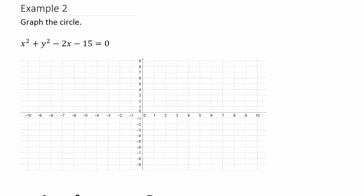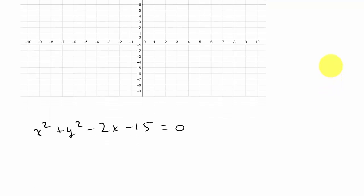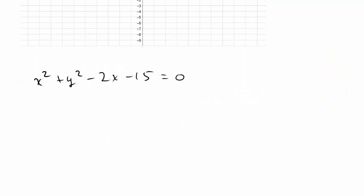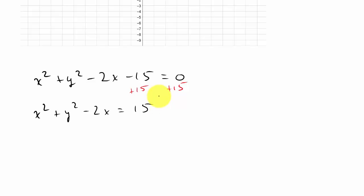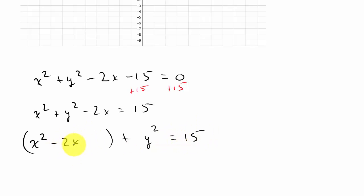Let's look at another example: x squared plus y squared minus 2x minus 15 equals 0. We're going to complete the square. Moving the 15 over by adding it to both sides gives x squared plus y squared minus 2x equals 15. Grouping terms: (x squared minus 2x) — with a space — plus y squared equals 15. There's no y linear term, so k is zero.